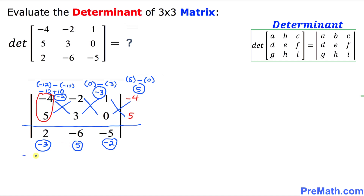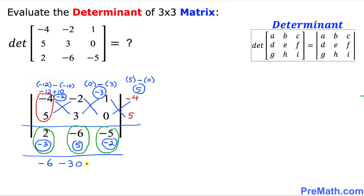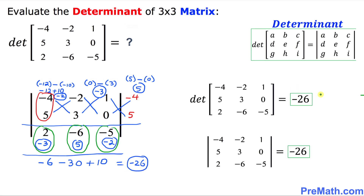Now our next step is to multiply out these numbers. 2 is going to get multiplied with negative 3, negative 6 with 5, and negative 5 with negative 2. That gives us negative 6 minus 30 plus 10. Simplifying, that is going to give us negative 26. So our answer turns out to be negative 26, and I have showed you two different ways to write these determinants.